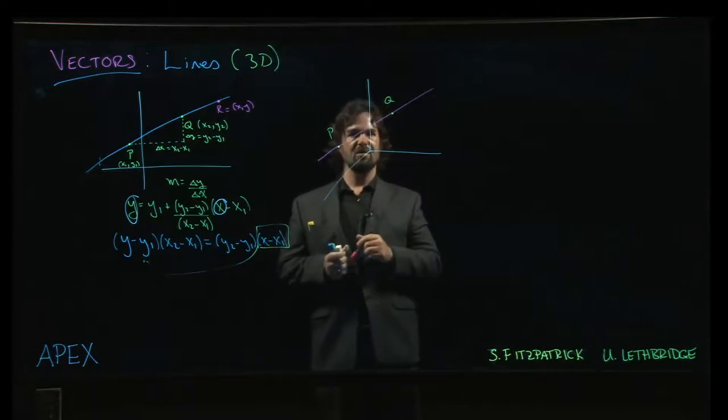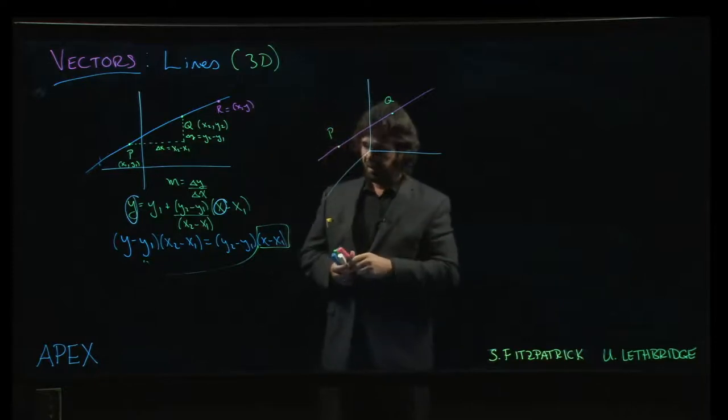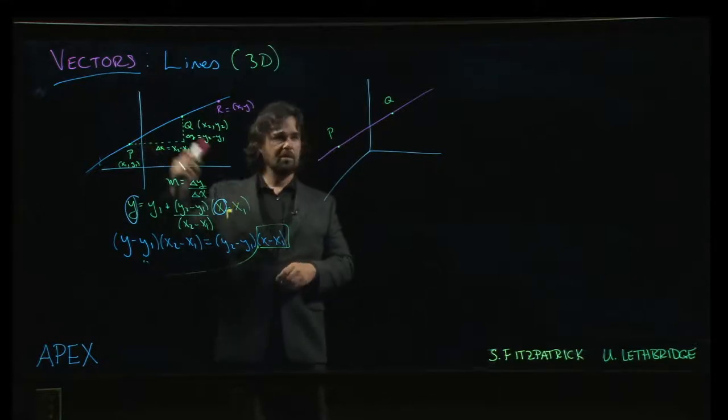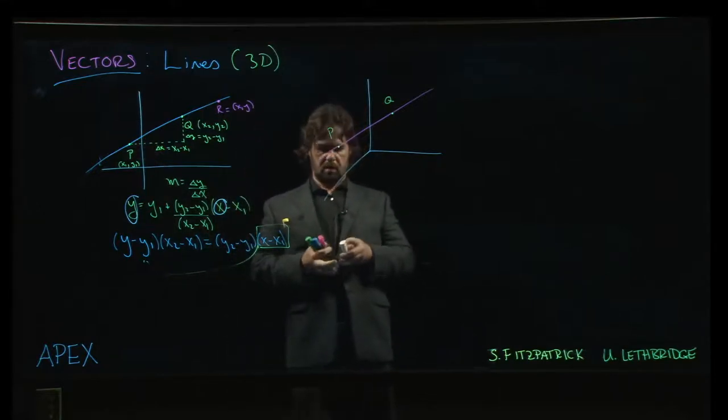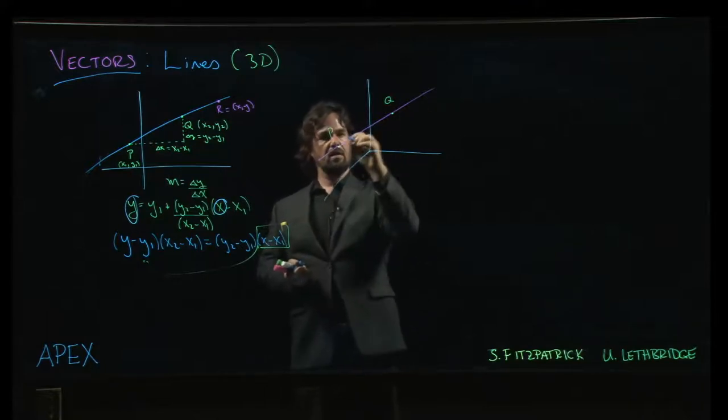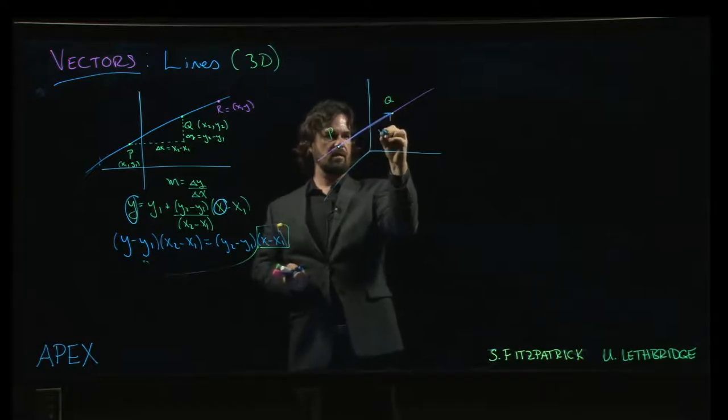Well, we're in three-dimensional space now, and we don't use slopes to describe directions in space. What do we use to describe direction? Well, we're in the chapter on vectors. We use a vector. So, what we want to do is construct a vector, and there's kind of a natural one here. We can take this vector v.